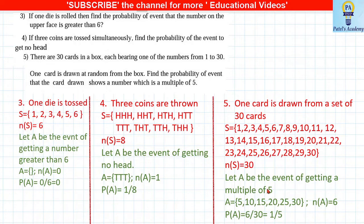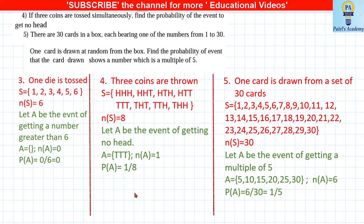Three coins are tossed; there are total 8 outcomes. Find the probability of getting no head. No head means only tails, so A = {TTT}, nA = 1. P(A) = 1/8.